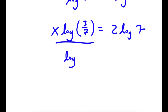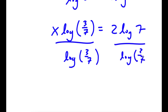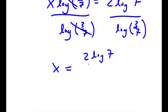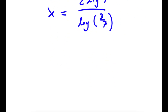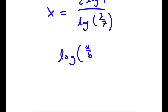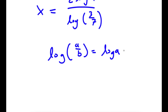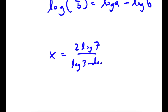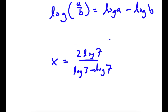And now if I divide both sides by log of 3 over 7, these two cancel out, and I have x is equal to 2 log 7 over log 3 over 7. Now if I have something in the form log a over b, this is equal to log a minus log b. So log 3 over 7 is going to equal log 3 minus log 7. So this is my answer.